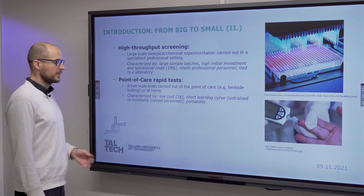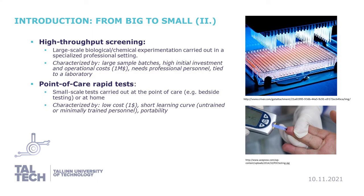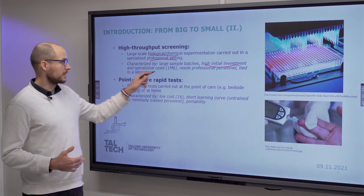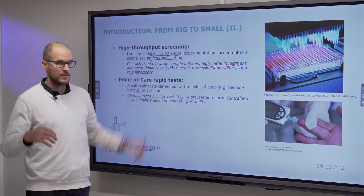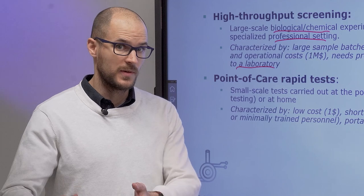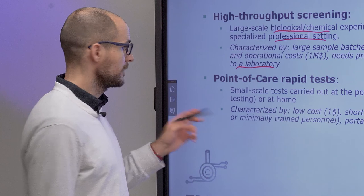High-throughput screening means large-scale biological or chemical experimentation — diagnostic or analytical — carried out in a professional setting. Multi-well plates and multi-channel pipetters are used to process hundreds of individual samples in a very short time. This is characterized by large sample batches, high initial investment and high operational costs, the need for professional personnel, and a laboratory with supporting infrastructure. Most importantly, it offers high batch sizes but low per-sample or per-assay costs.